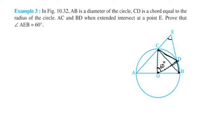The angle subtended at E by arc CD equals angle ECD. Angle CBD is half of angle COD. Since angle COD is 60 degrees, angle CBD is half of 60, which equals 30 degrees.